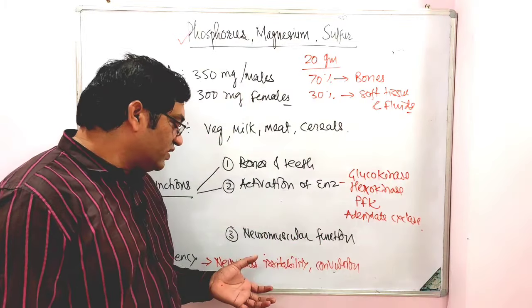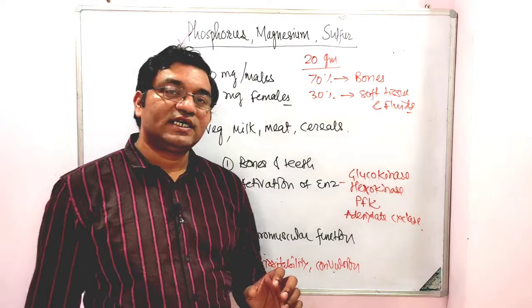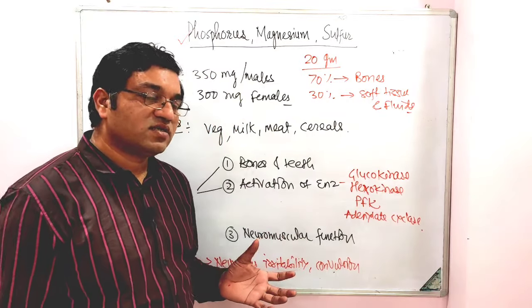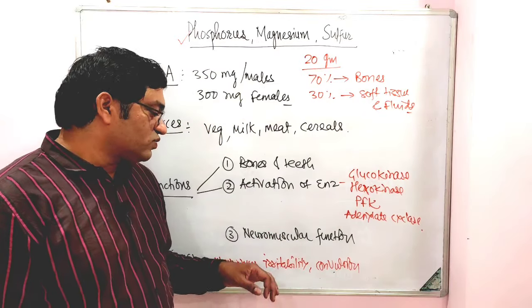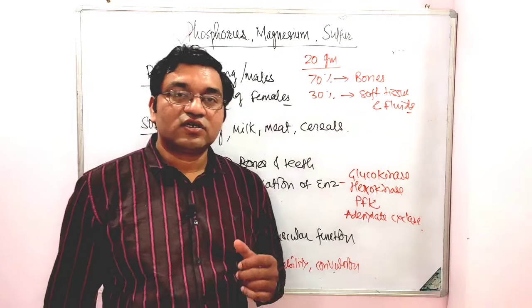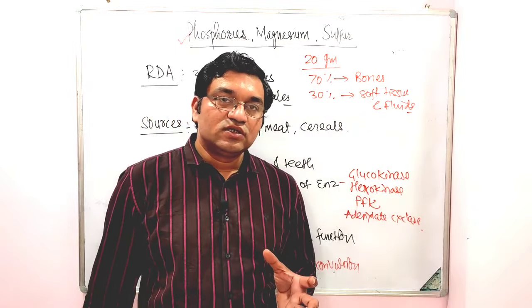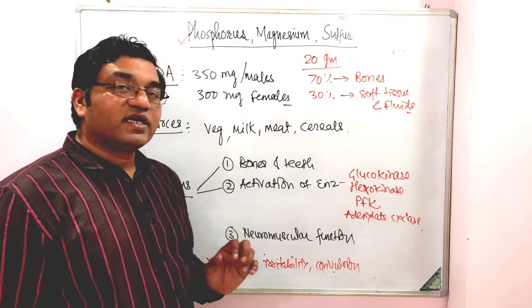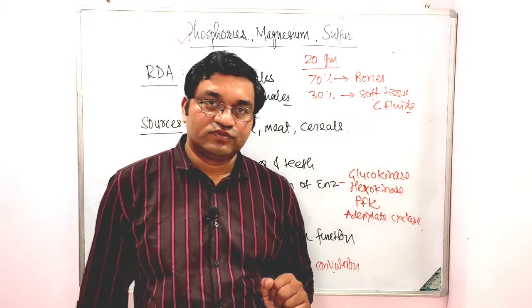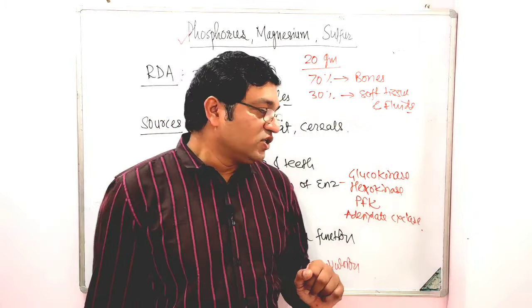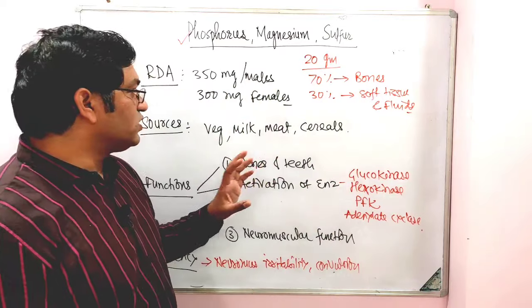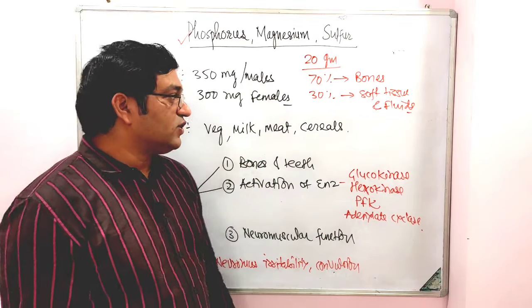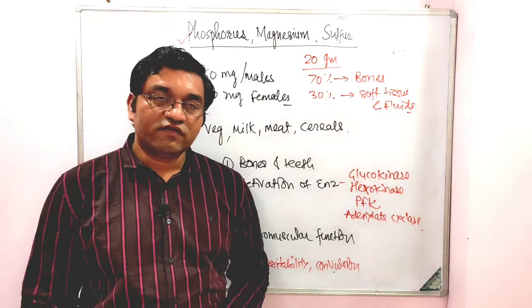So this is all about Magnesium in short. Now coming to the discussion of Sulphur. Sulphur is a major element. The requirement as such is not known. It is required because it is present in almost all proteins — proteins which contain the sulfur-containing amino acids methionine and cysteine. That is why the RDA of Sulphur is not known. Sources are dietary proteins.